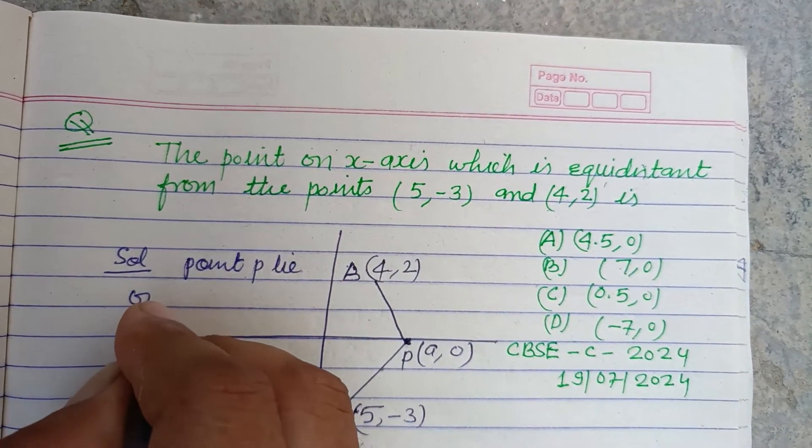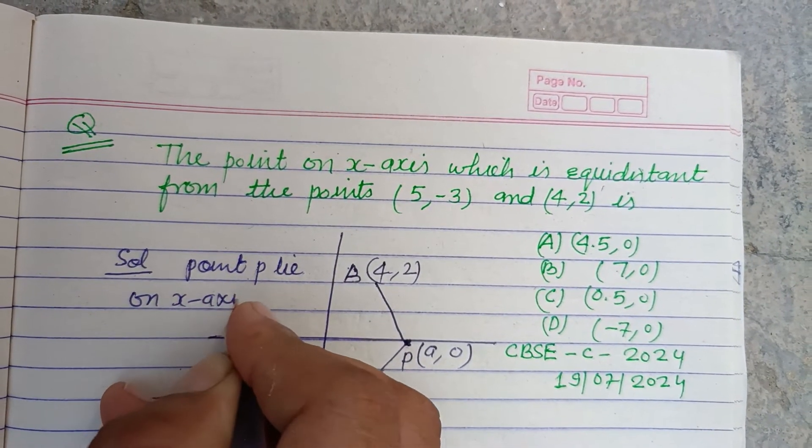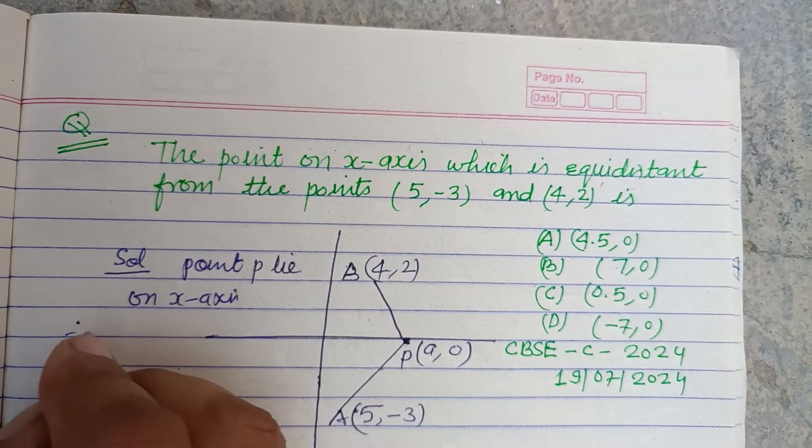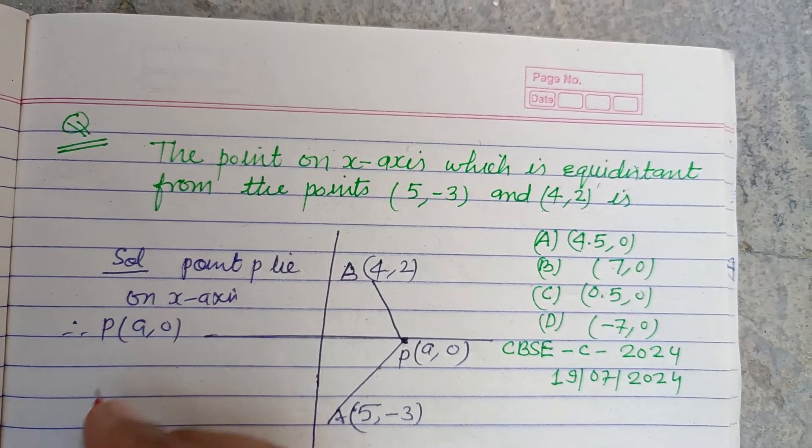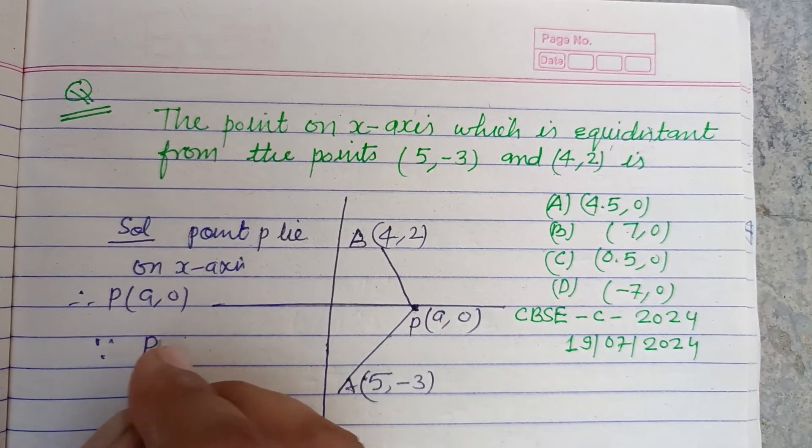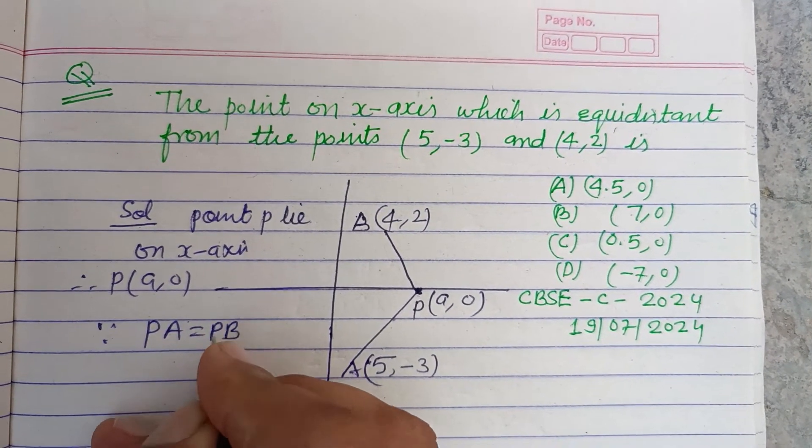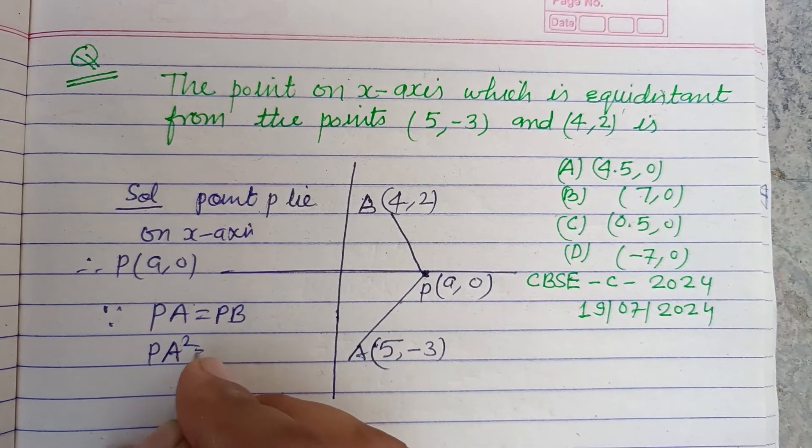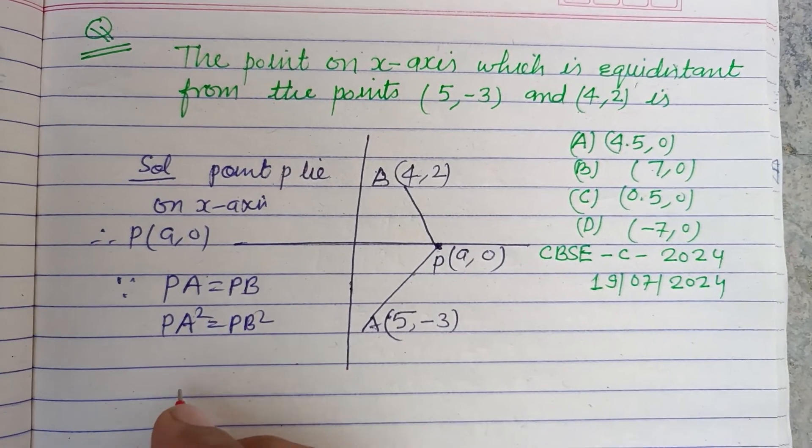Point P lies on the x-axis, therefore P is (a,0). It is given that PA equals PB. Squaring both sides, we get PA² = PB².